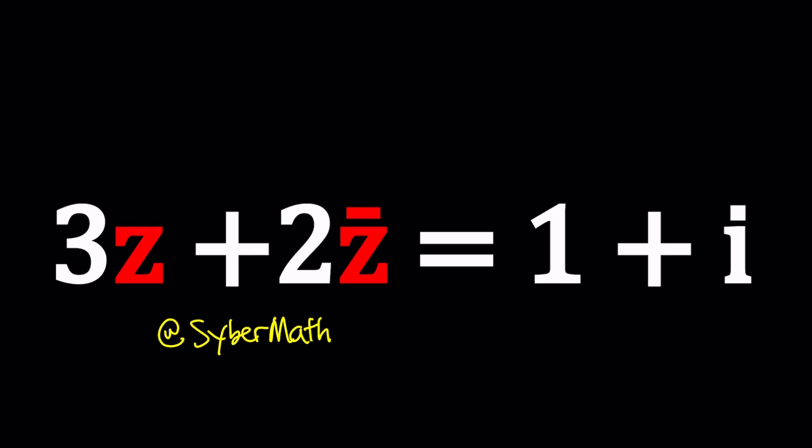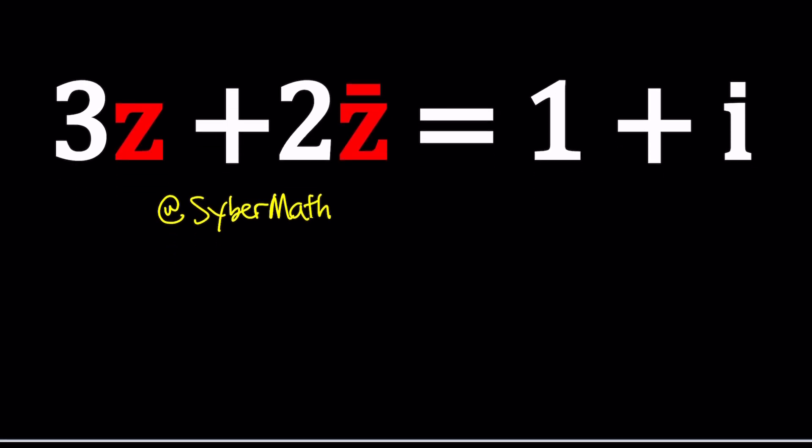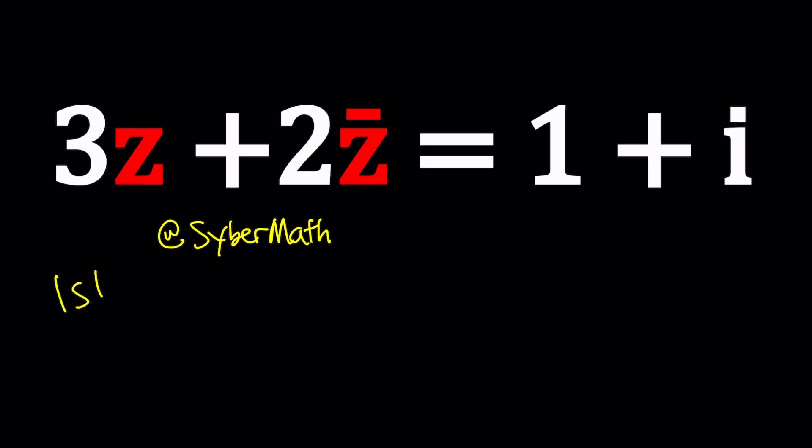Let's take a look at this problem from two different angles and start with the first method. We have 3z plus 2z̄ equals 1 + i, and we're going to be solving for z values. If you need more information about complex numbers, go ahead and check out my lecture videos.